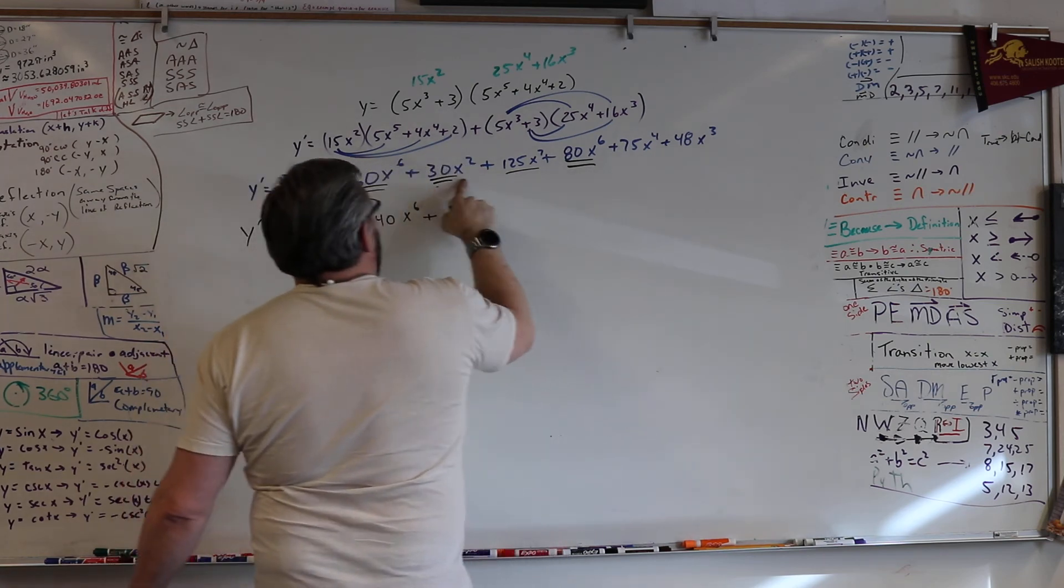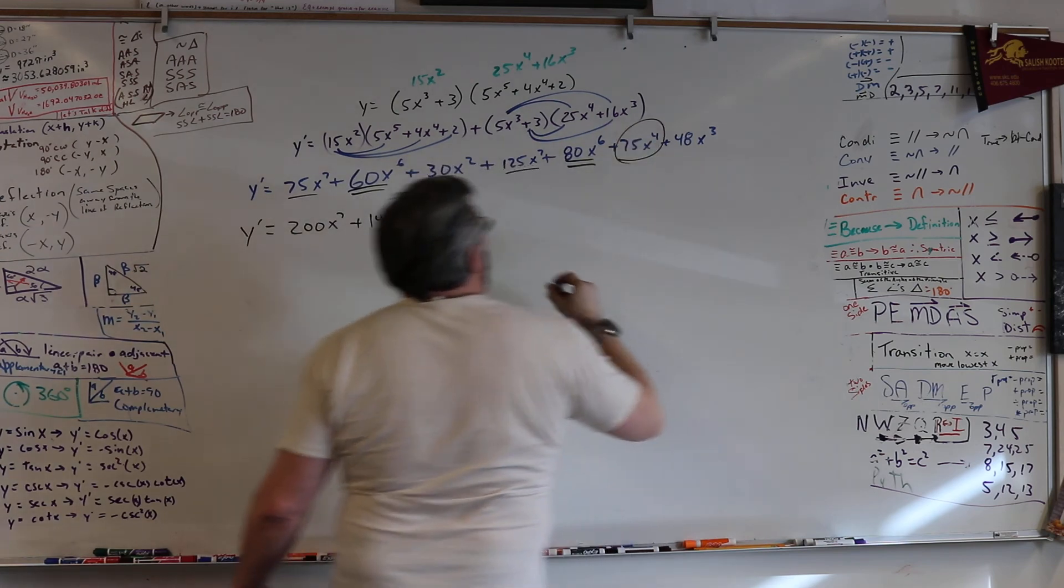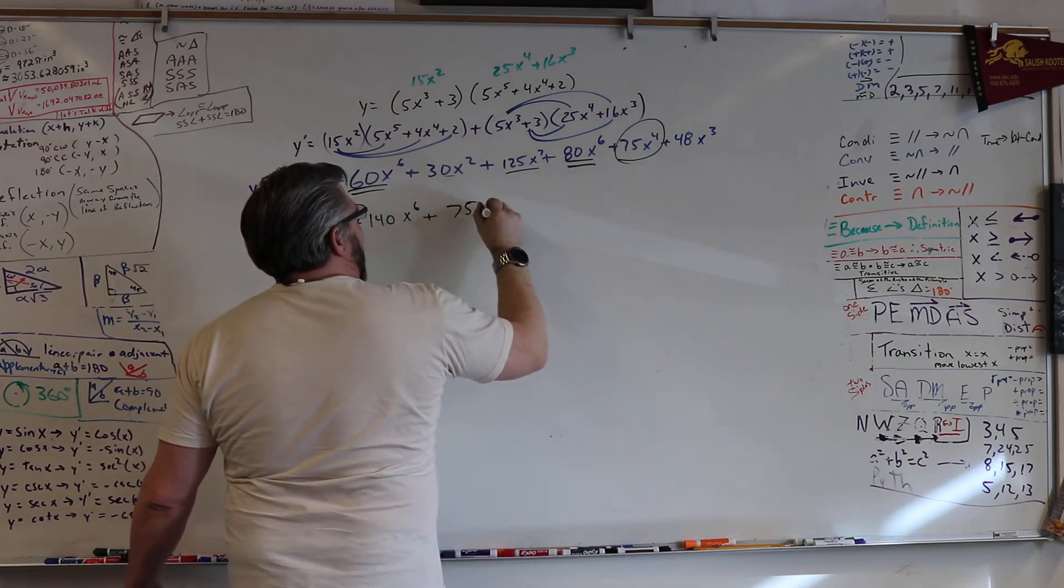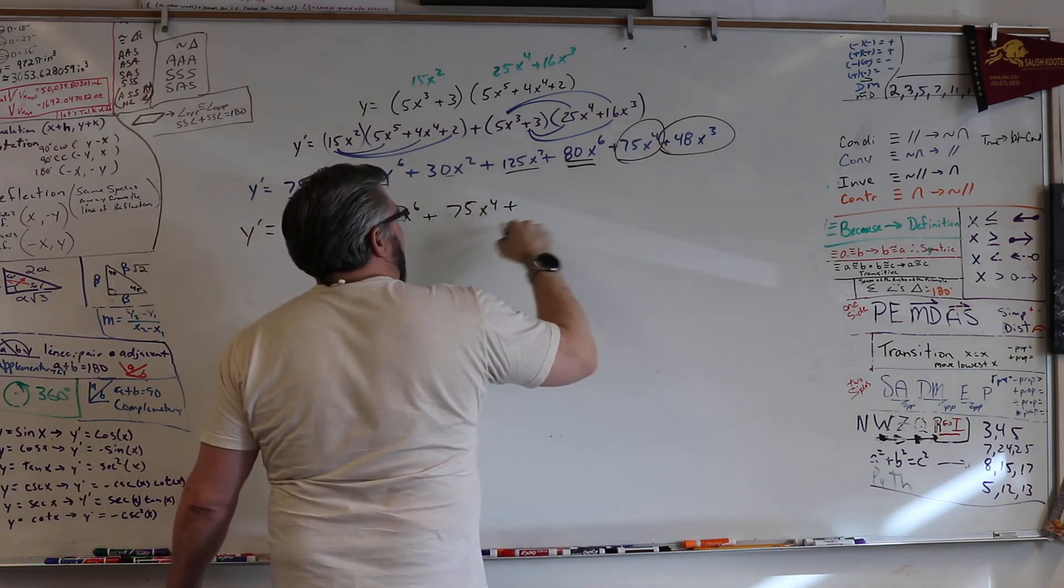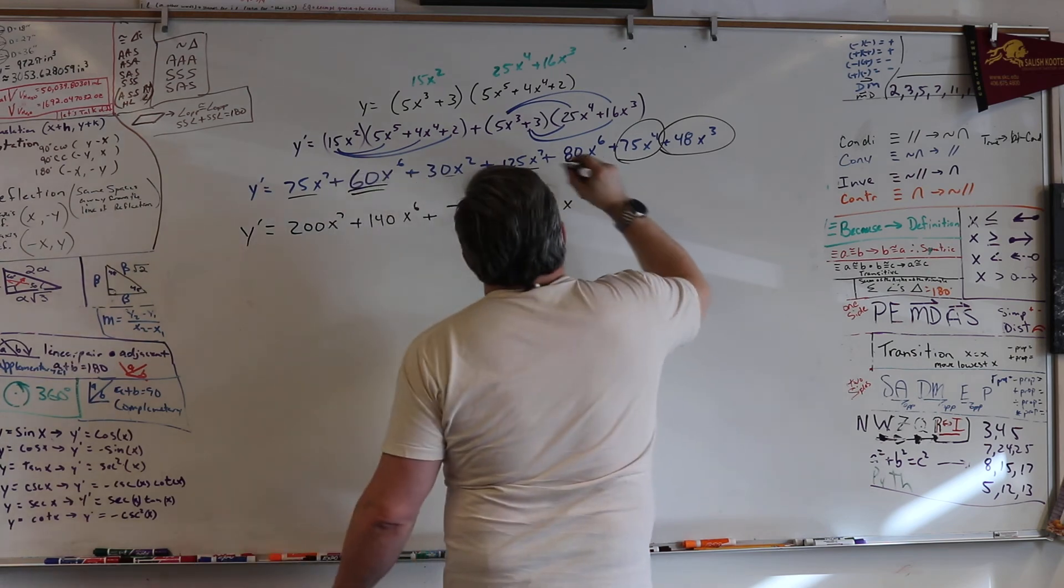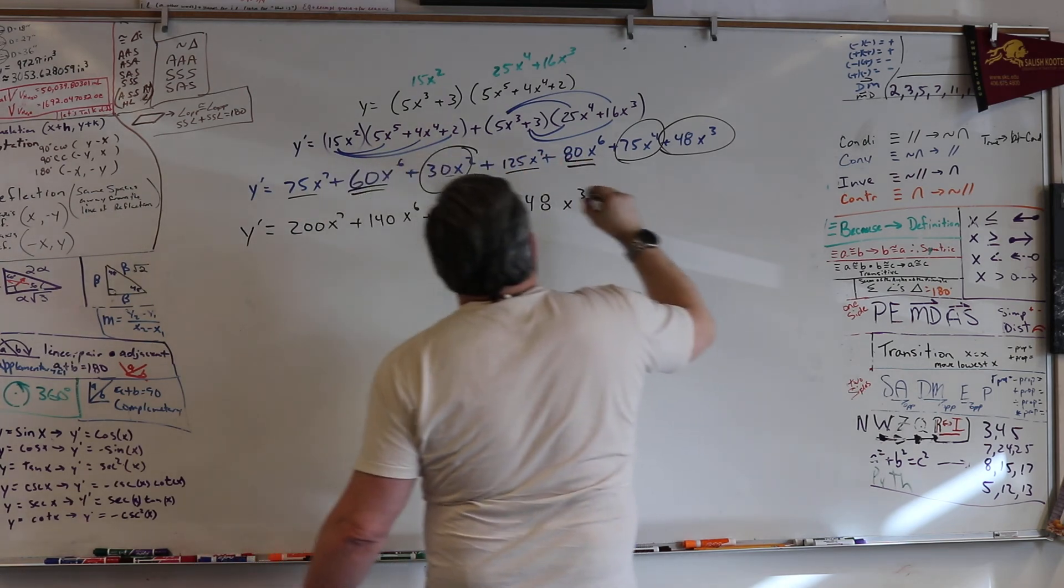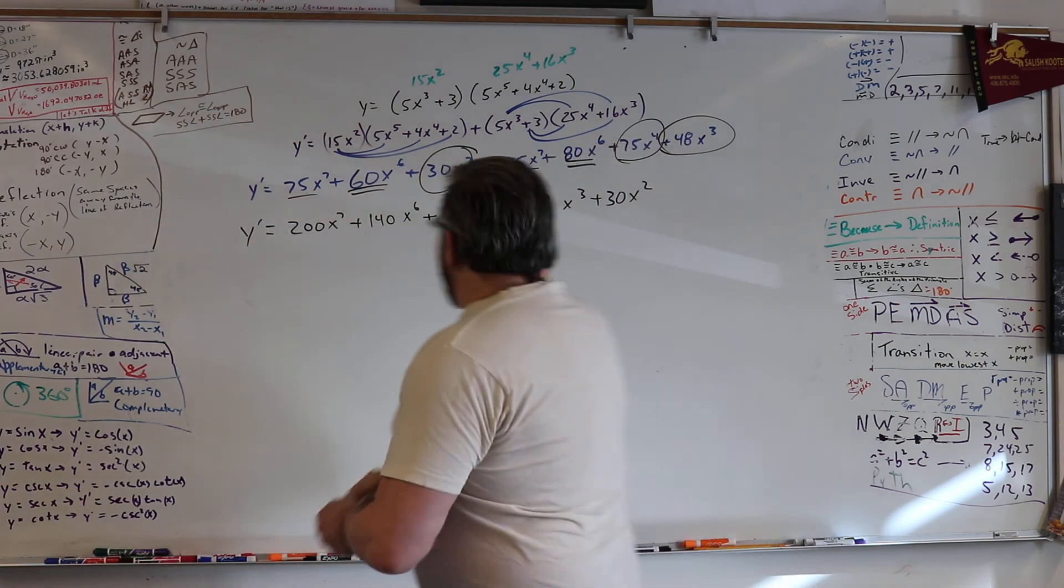So we can't do the two yet, so let's start circling. Four, so plus 75 x to the fourth. Three, plus 48 x to the third. Two, plus 30 x squared. One, there is that.